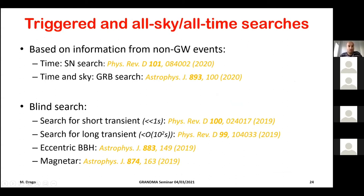There are two types of burst searches: targeted and blind. In a targeted search, you have information from another messenger — for example, a supernova seen via neutrinos or electromagnetic emission — so you search in a known time window, and for a gamma-ray burst you also know the sky position. Restricting the search this way dramatically reduces the glitch background. Without this information, you perform a blind search: you search all times and all sky positions where detectors are operative.